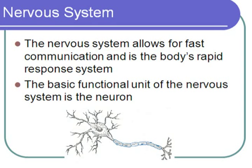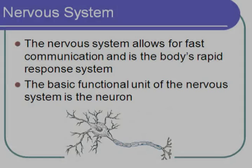The nervous system allows for fast communication and is the body's rapid response system. The basic functional unit of the nervous system is the neuron. A representative neuron is pictured below and we will be discussing the structure of the various parts of the neuron.